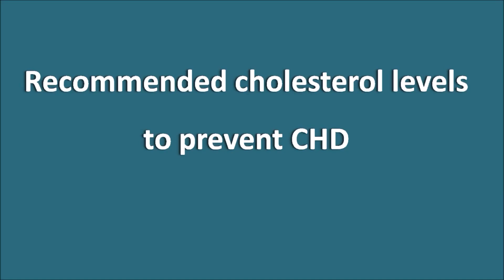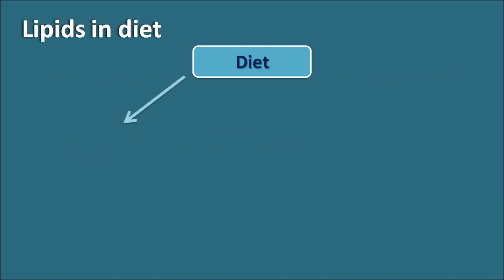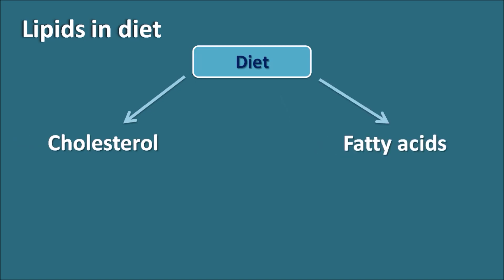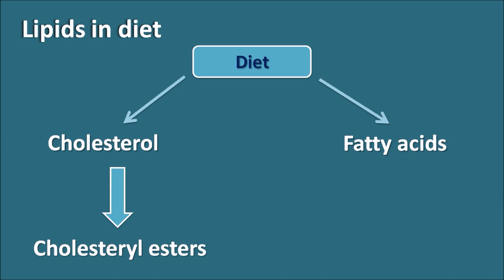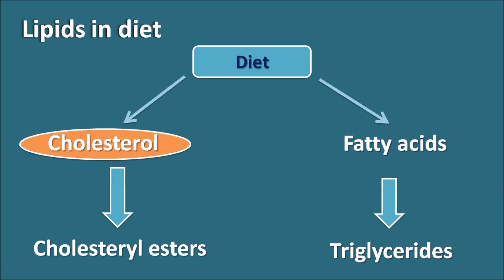Recommended cholesterol levels to prevent coronary heart disease. Two important lipids in the diet are cholesterol and fatty acids. Cholesterol is absorbed into the systemic circulation as cholesterol esters after esterification, while fatty acids react with glycerol to form triglycerides. These cholesterol esters and triglycerides are then absorbed into the systemic circulation. In this video, we will see what are the recommended levels of cholesterol and triglycerides to prevent coronary heart disease.